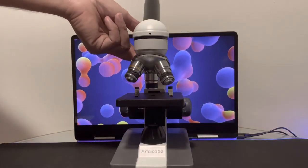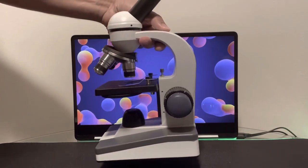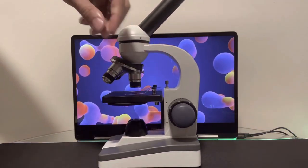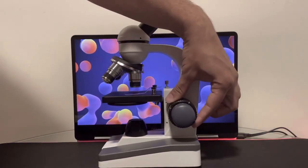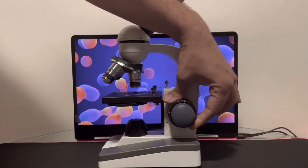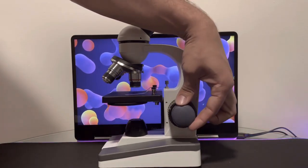And if we pick it up and turn it to the side one more time, here we have the coarse focusing knob. And right in front of it, we have the fine focusing knob.